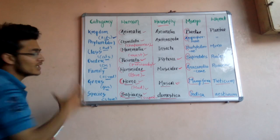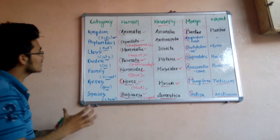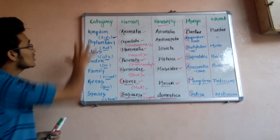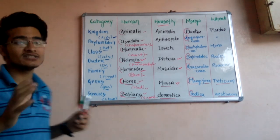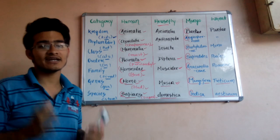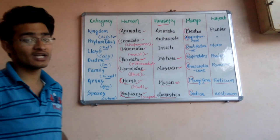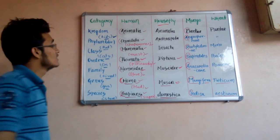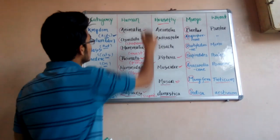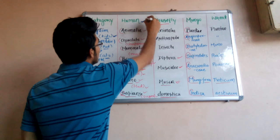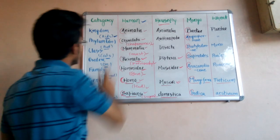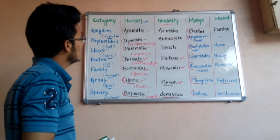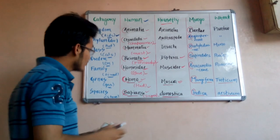When we go from Species to Kingdom, it will be the taxonomical hierarchy in increasing order, because Kingdom is the largest category of the taxonomical hierarchy. You have to remember that. So now, for humans, we need to memorize their taxonomical hierarchy.